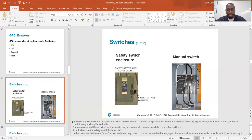A typical residential safety switch is shown left. Unlike breakers that have a snap action, switches may consist of a throw handle that engages blades and clips, sometimes called a knife switch, as shown to the right. When the switch is on, when it's in the up position, these little blades here lock into the contacts up here. And then when you flip this switch down, these two blades come out of these contacts and open the circuit. So that's how these work.